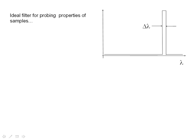Really, if we could have our way in a perfect world, we would want some kind of filter that would probe the properties of the sample, that could look at the light that comes off. And we might want to have a filter with some center wavelength lambda naught that passes some range of wavelengths, delta lambda, so only the wavelengths very close to lambda naught would be emitted.